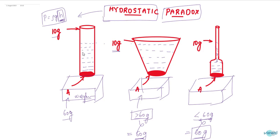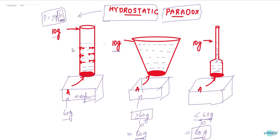The fluid particles act pressure perpendicular to the contact surface. The glass tube offers a resistance force opposite to the pressure acting by the fluid or liquid. So the resistance force is offered by the surface, and all these forces are balanced.